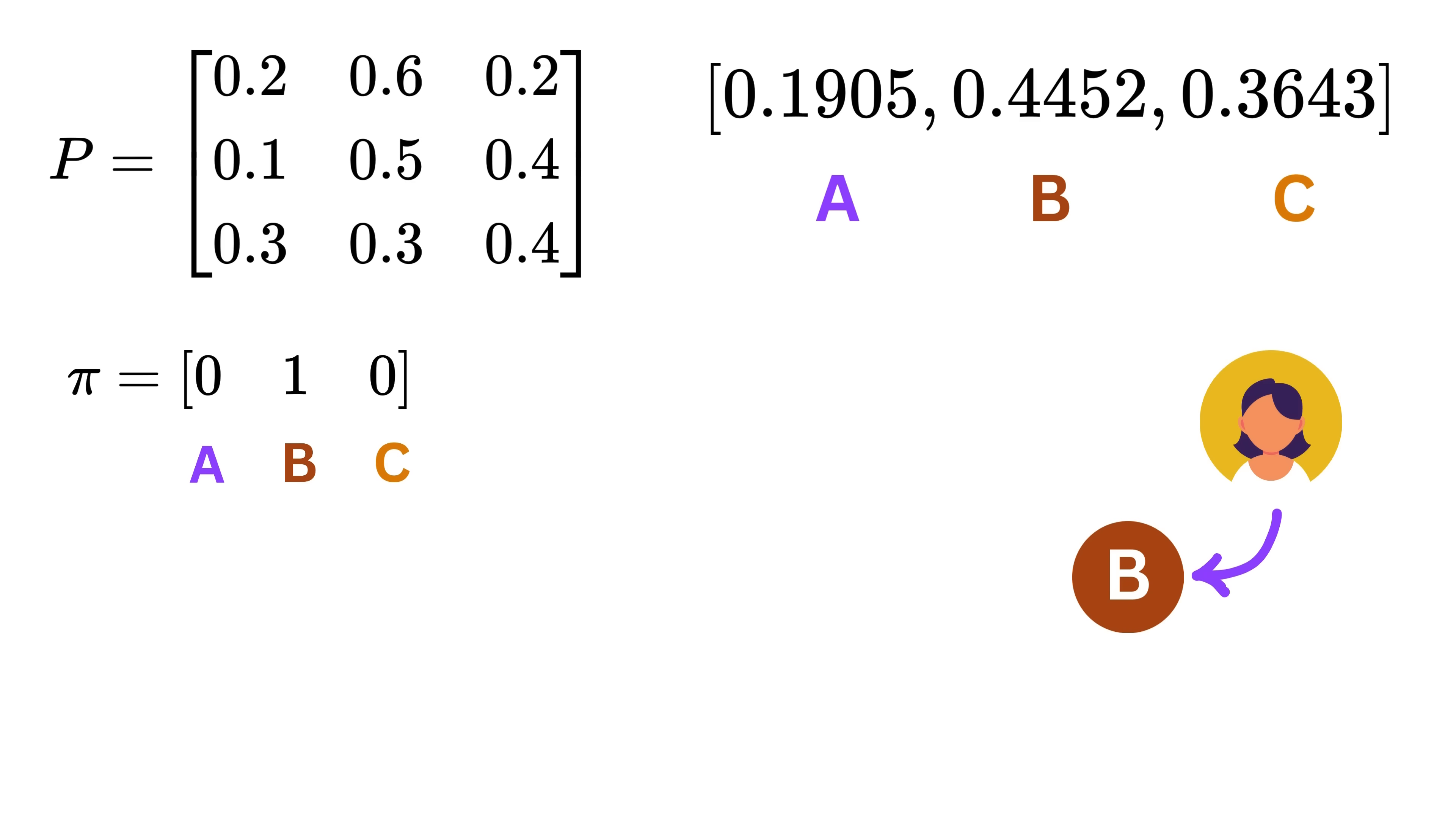For example, if we assume the user starts on page B, then pi would be 0, 1, 0, since the user is definitely on page B and not on the others.